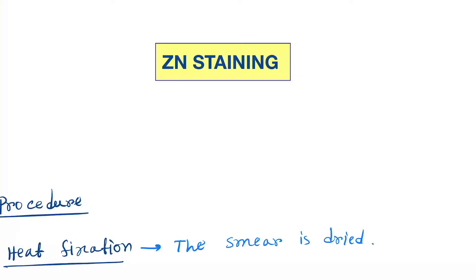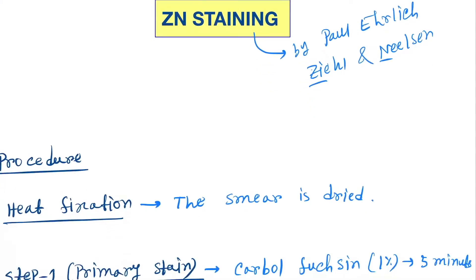Hello friends, today our topic is ZN staining. We'll see the mechanism of action. First, let's cover some basics, then we'll go to the mechanism. ZN staining was discovered by Paul Ehrlich and modified by Ziehl and Neelsen, which is where the name ZN comes from.